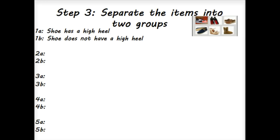Now we go into step three. We're going to separate our items — our shoes — into two groups based on the observations we made of their similarities and differences. In this case, we're going to look at shoes that have a high heel and shoes that do not have high heels.